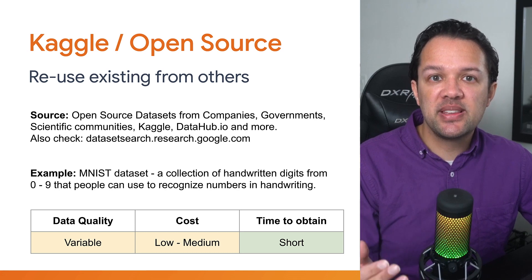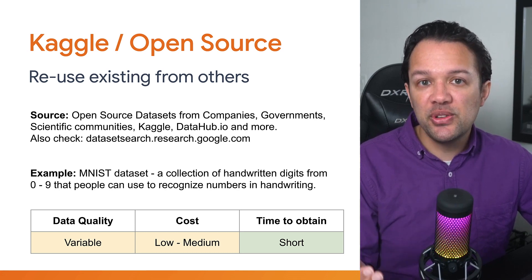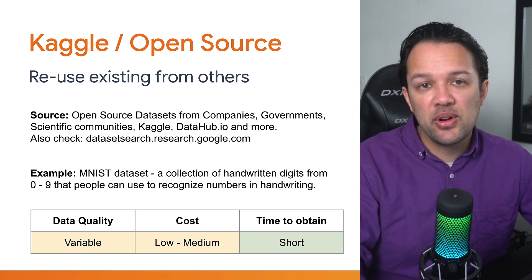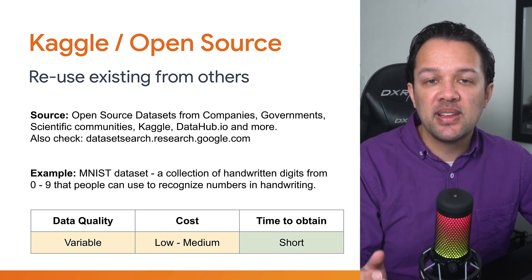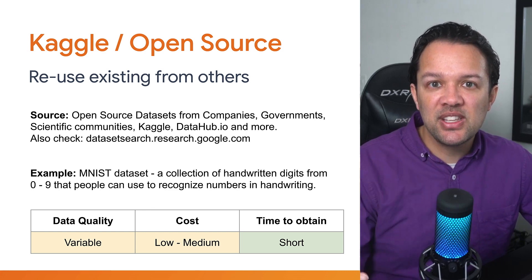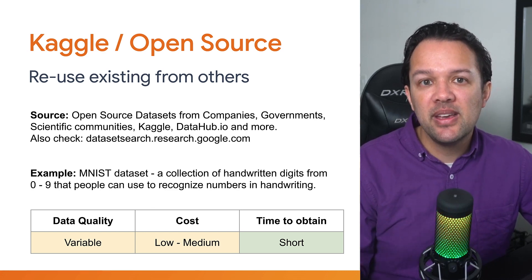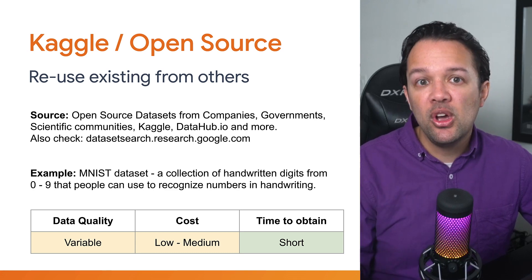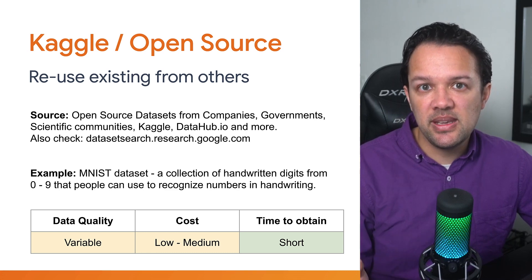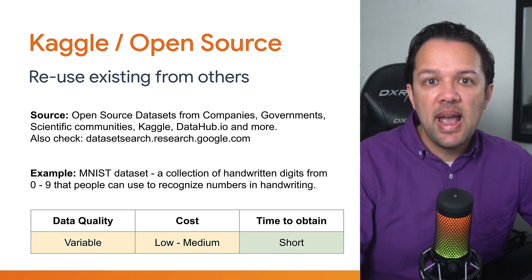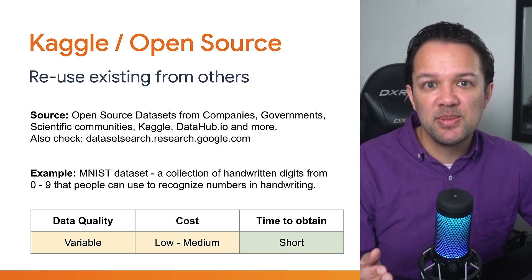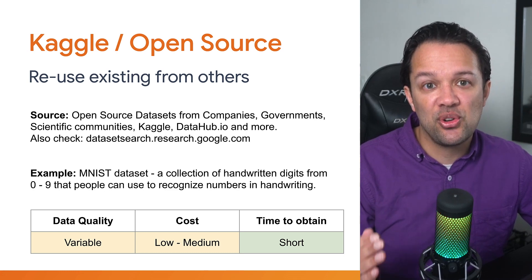Now, if the problem you're trying to solve is something that research communities are also interested in, there's a good chance that an open source dataset may exist. One popular website known as Kaggle often sets challenges to the machine learning community, providing datasets for a certain domain in the hope that people will compete to make the best performing model in return for a reward or status on the website. Many other companies, governments, and scientific communities also release public datasets, and a quick search online will reveal many. Google even has a dataset search engine specifically for this at datasetsearch.research.google.com.